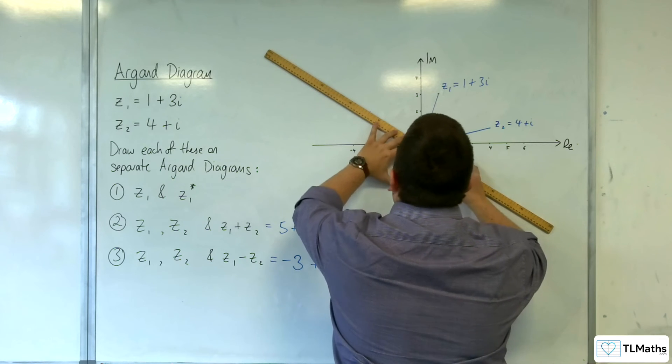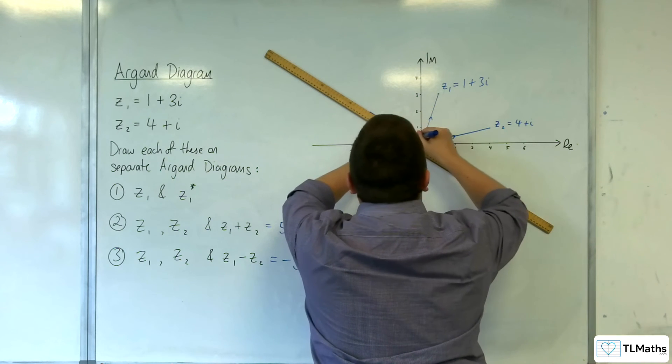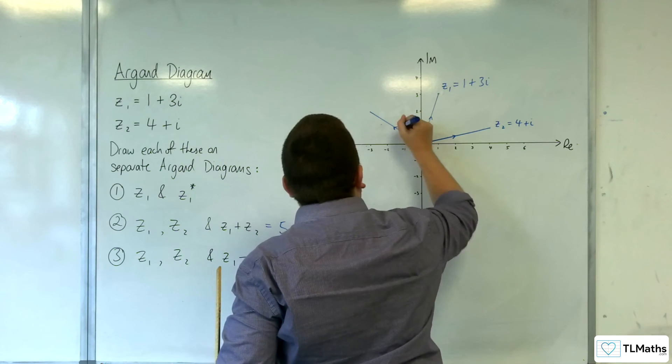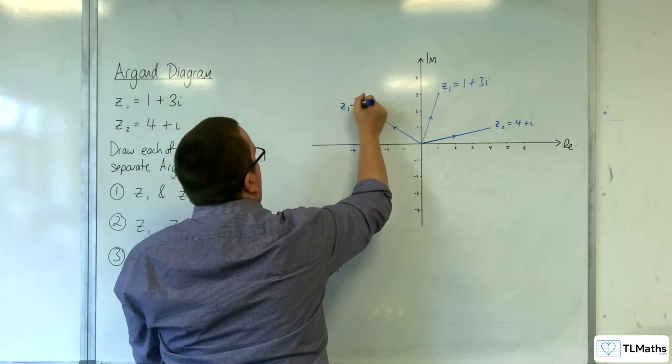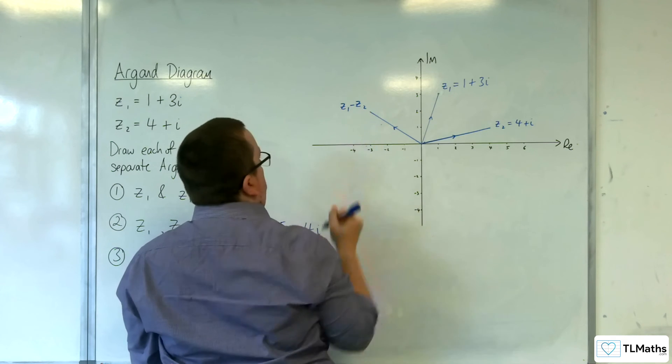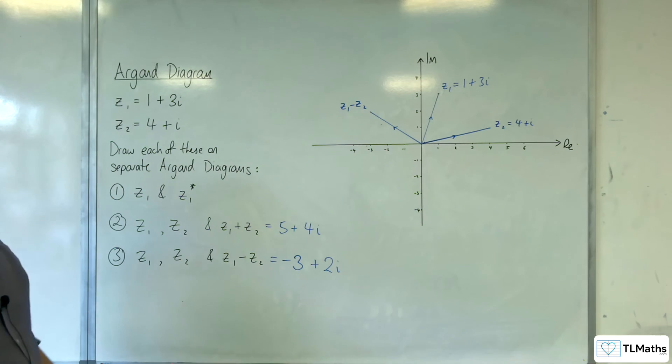And our result looks like this. So, that is Z1 take away Z2. Okay. So, how do you visualize that?